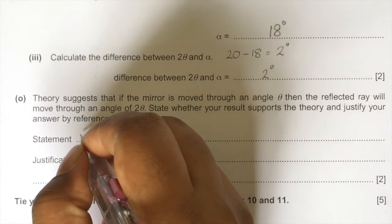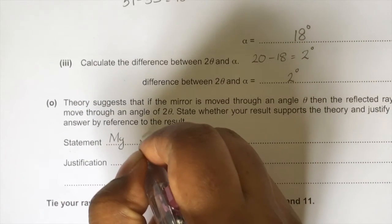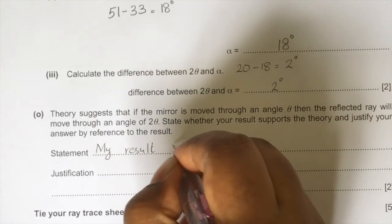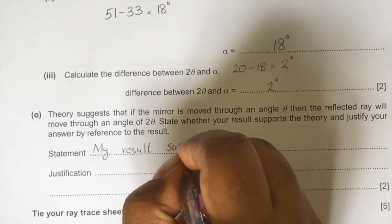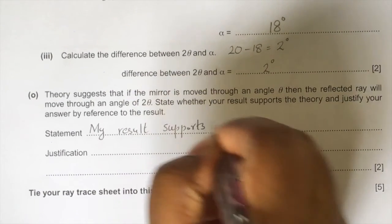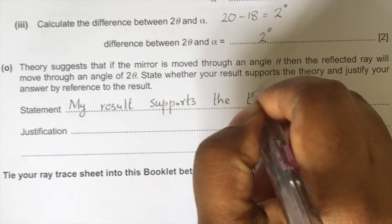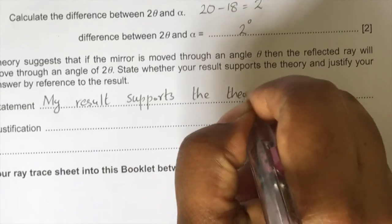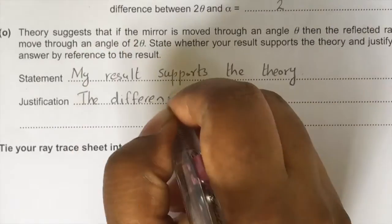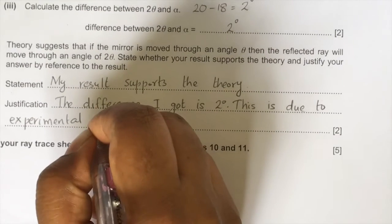Next, you have to give statement with respect to your observation and the theory. In this, the theory suggests that if I move the mirror through an angle theta then the reflected ray will move through an angle 2 theta. But we got a difference of 2 degree. This is a small difference and in your statement you can write that your result supports the theory. Your statement must be justified with your result. The small difference you got is due to the experimental error.